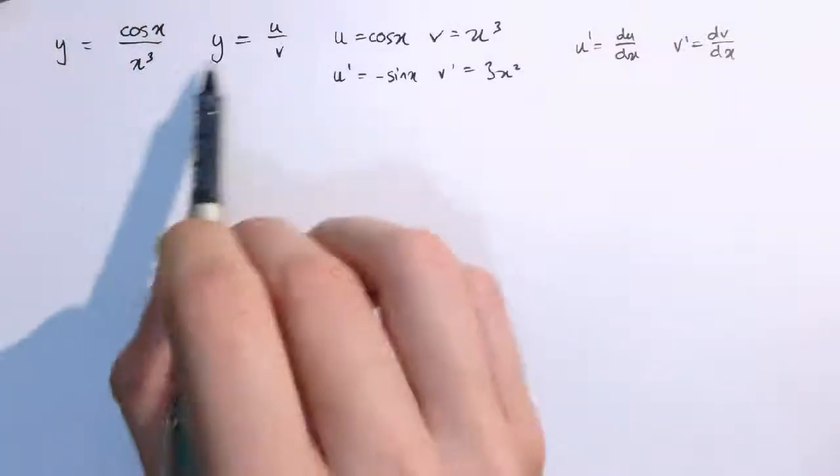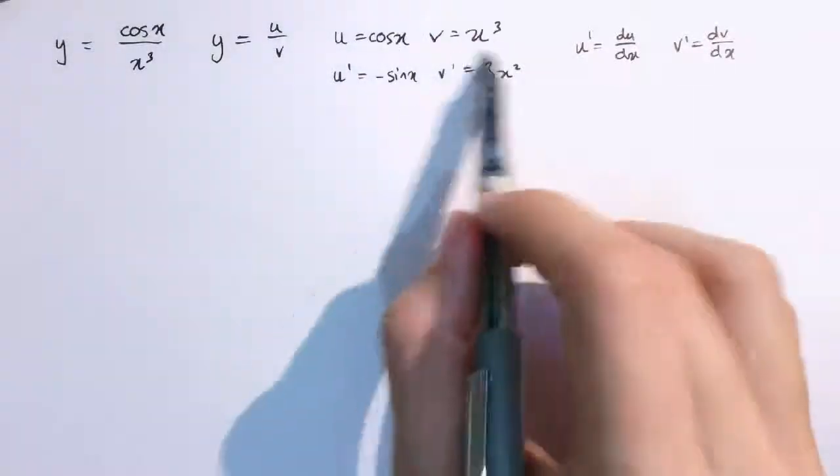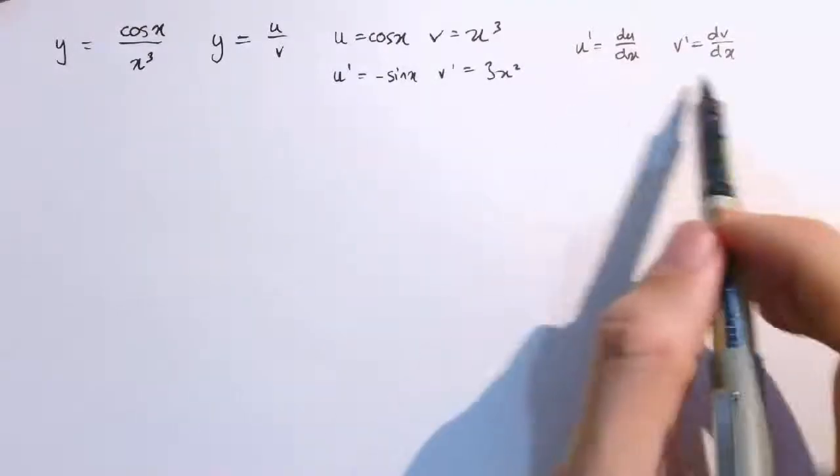So I'm going to write this as y equals u over v, where u is cos x and v is x cubed. I'm not going to look at this as an example, but just to make sure the notation is clear.